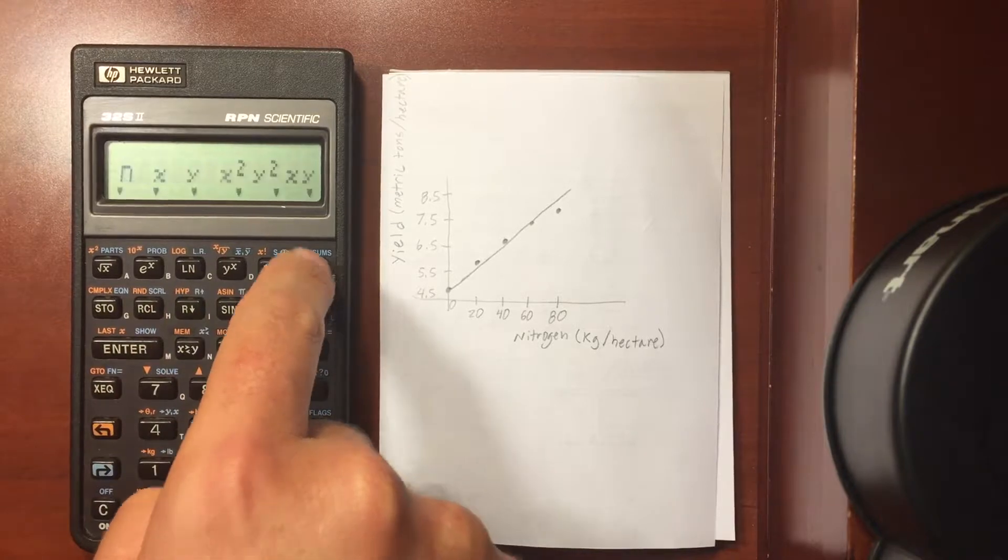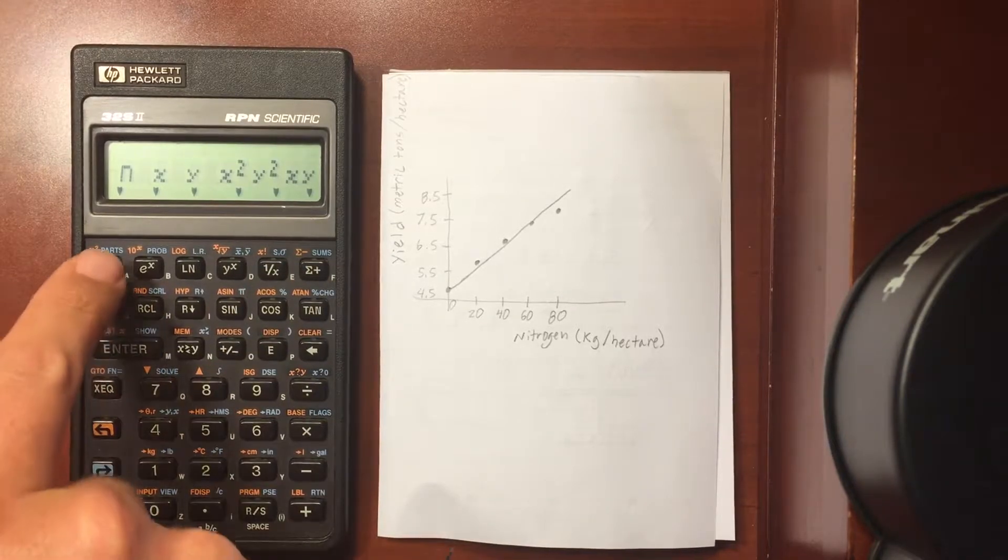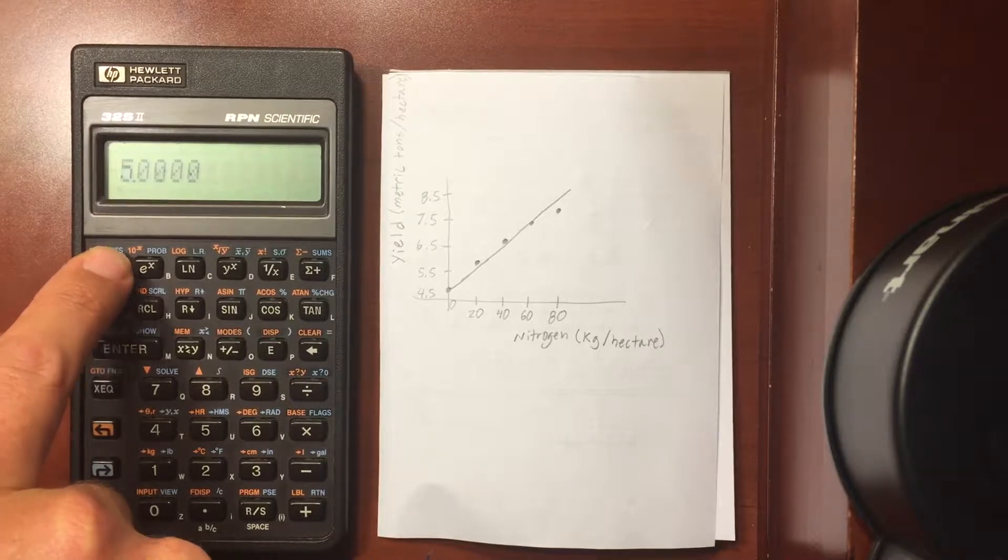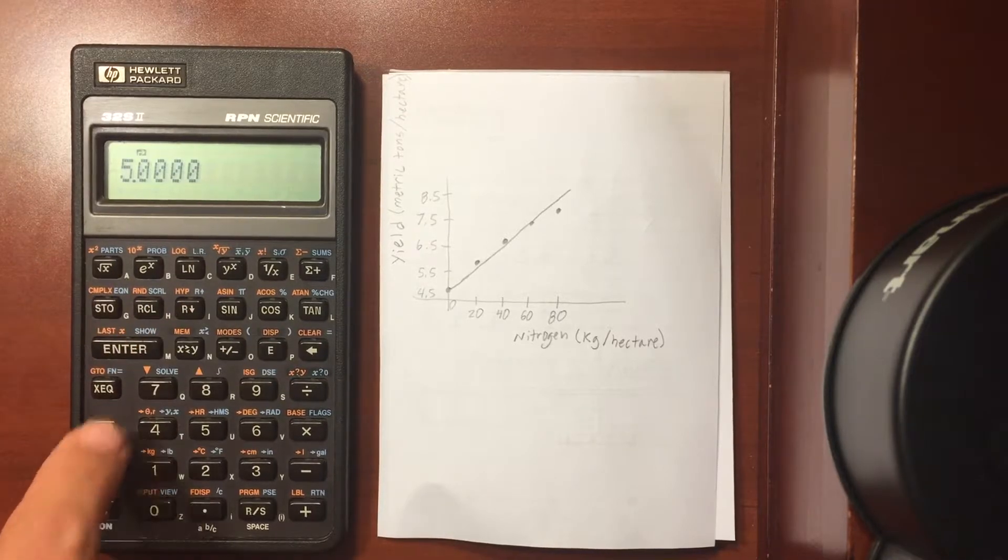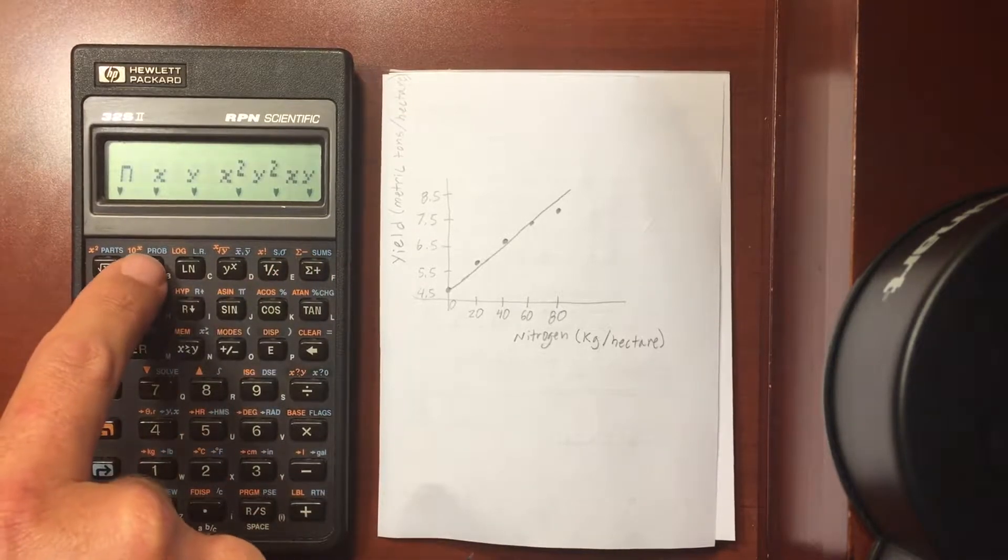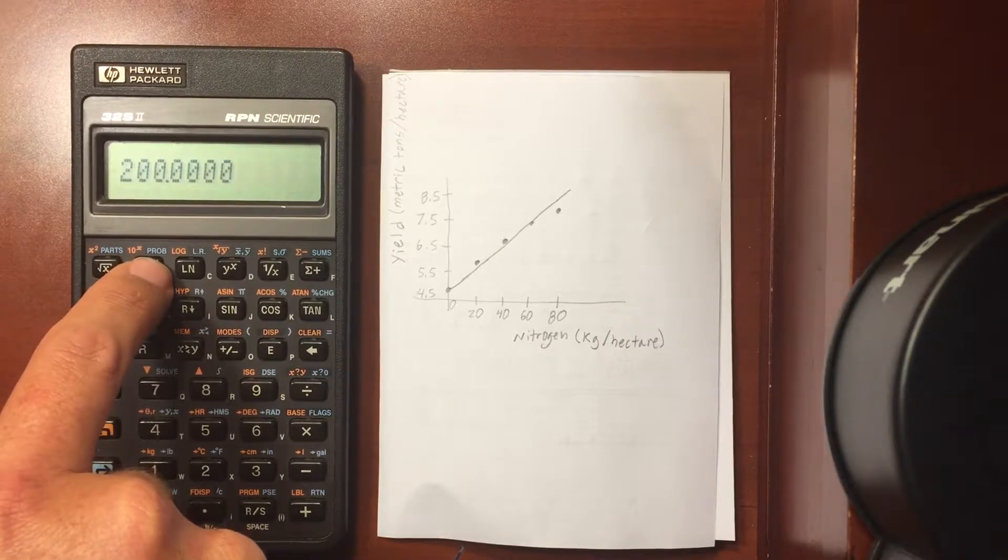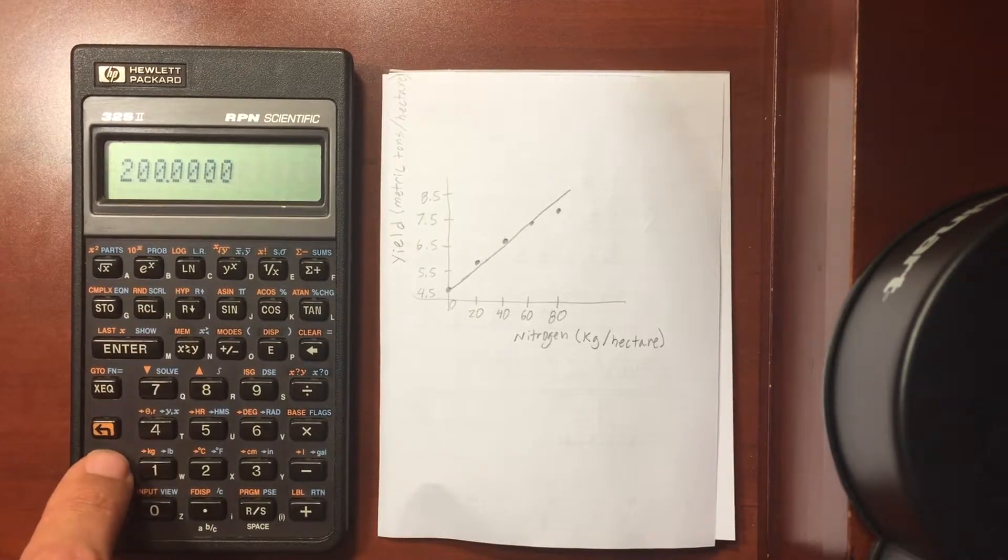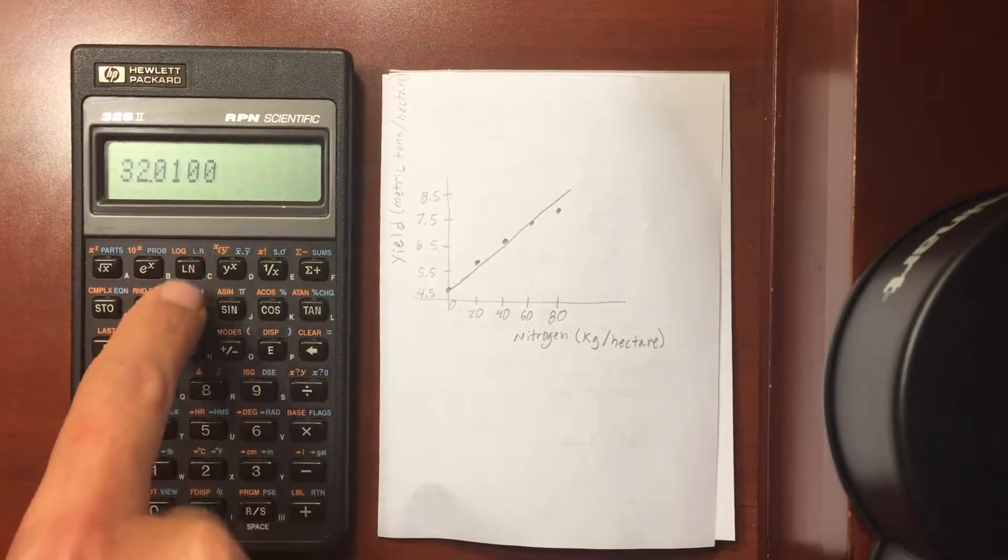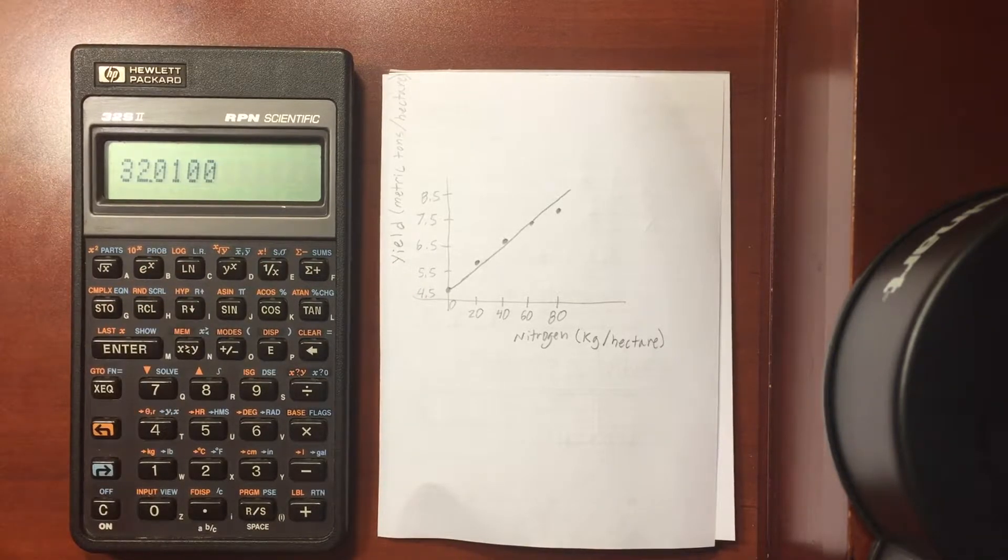Let me go to sums first. So if I hit n that will tell me how many items I have in my summation, which is 5 as we knew. If I hit x, that will do the sum on the values in x. I do y. That gives me the sum of the values in y.